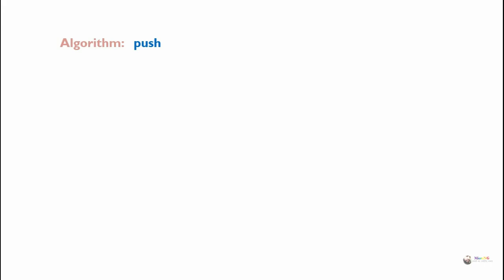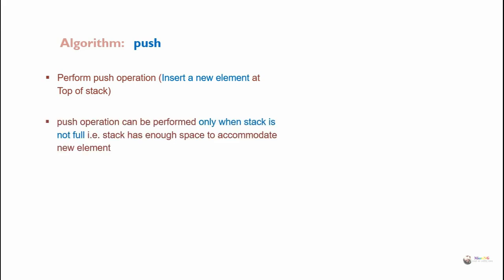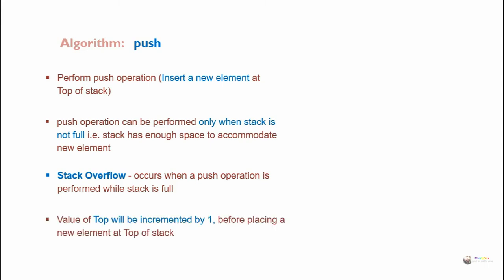Algorithm for push operation: it performs push operation, inserting a new element at the top of the stack. Push operation can be performed only when the stack is not full — that is, the stack has enough space to accommodate the new element. Stack overflow occurs when a push operation is performed while the stack is full. Value of top will be incremented by one before placing a new element at the top of the stack. The algorithm is named push, does not return any value, and takes a parameter — the new item to be pushed into the stack, which is stored in an array named 'list'.